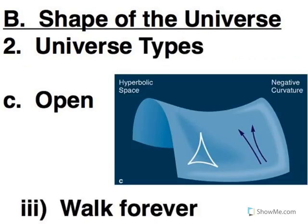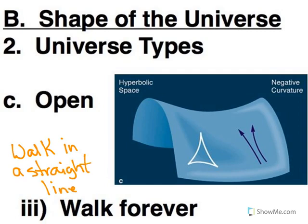So if you walk in a straight line, you are going to be walking forever. Recall in a closed universe, you eventually come back to your starting point. Open universe, it does not curve back on itself like that. So you are going forever. You'll never come back or retrace your steps.